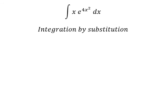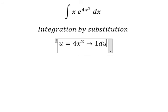We set u = 4x². Now we take the first derivative of both sides. The first derivative of u is du, and the first derivative of 4x² is 4(2x)dx, which equals 8x dx.